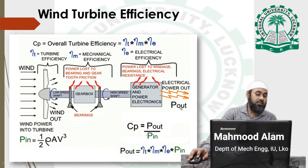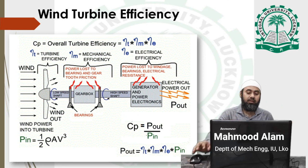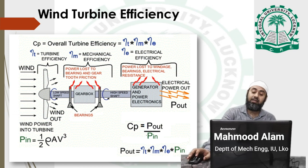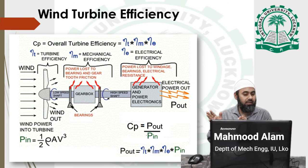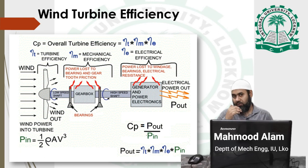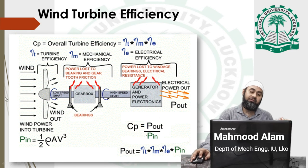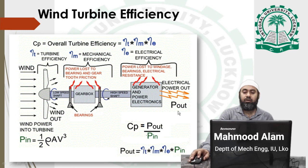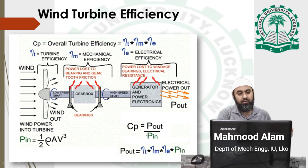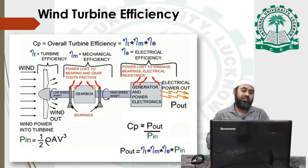The overall efficiency formula also means that power output equals the turbine efficiency multiplied by the mechanical equipment efficiency multiplied by the electrical generator efficiency, all multiplied by the power input. If we know the efficiencies of all three devices, we can easily calculate how much power we will get from the system — knowing the wind blade efficiency, gearbox efficiency, and generator efficiency allows us to calculate the total power output.